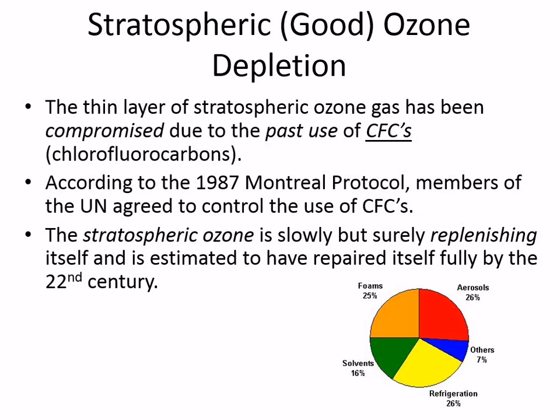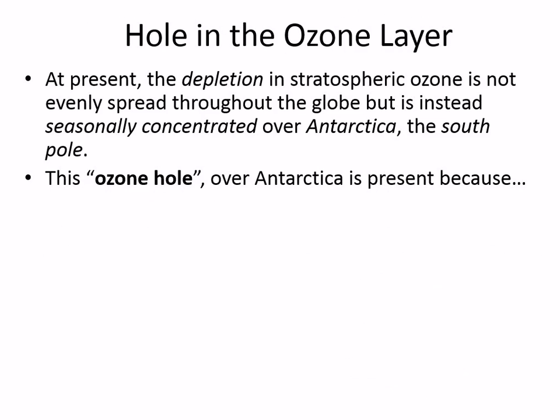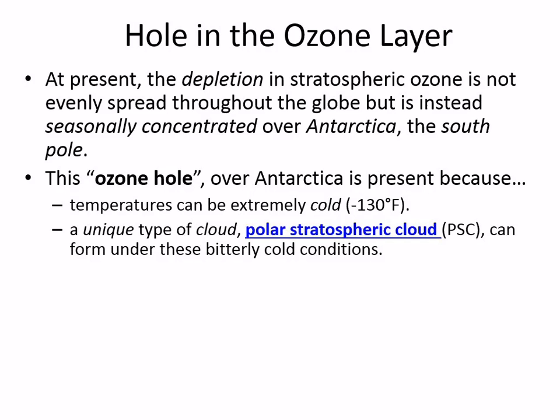I have a couple of slides to talk you through why the O3 — the ozone in the stratosphere — becomes compromised. It's seasonal, and the Antarctic is in the southern hemisphere. We have the Arctic in the northern hemisphere and the Antarctic in the southern. The ozone hole over Antarctica is the largest of the two holes. It has to do with polar stratospheric clouds.